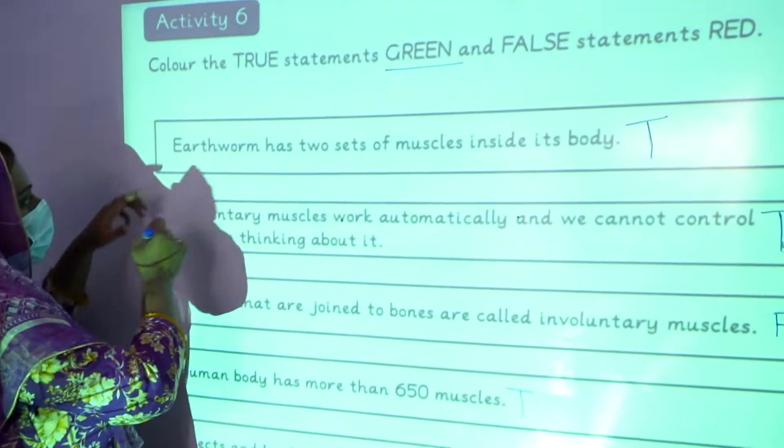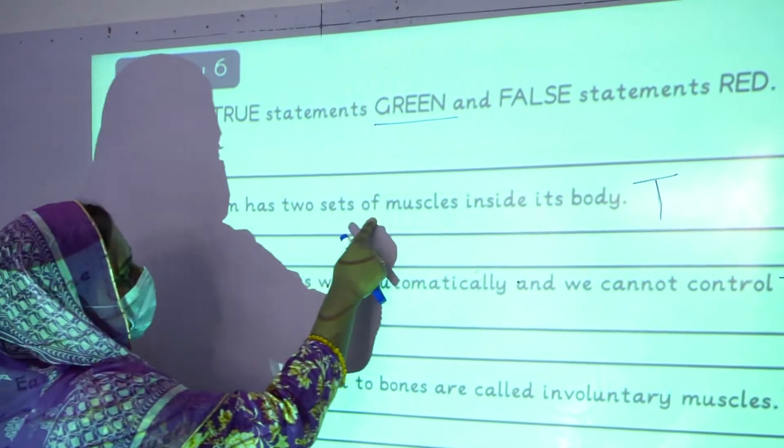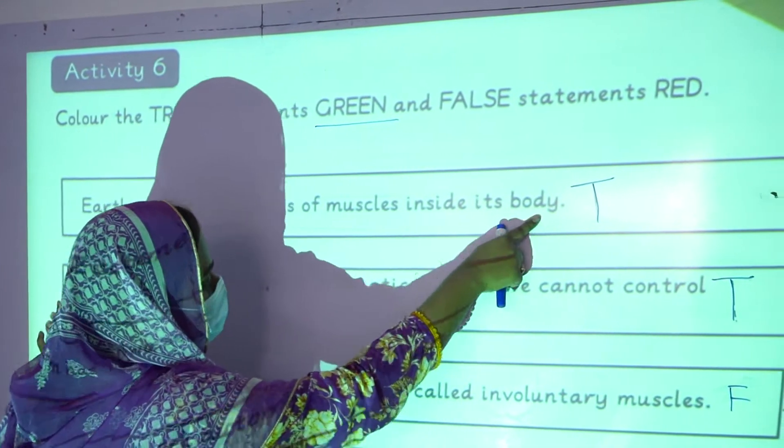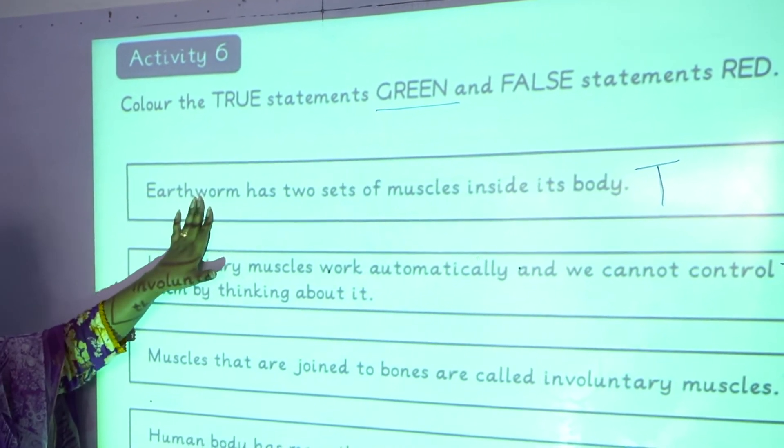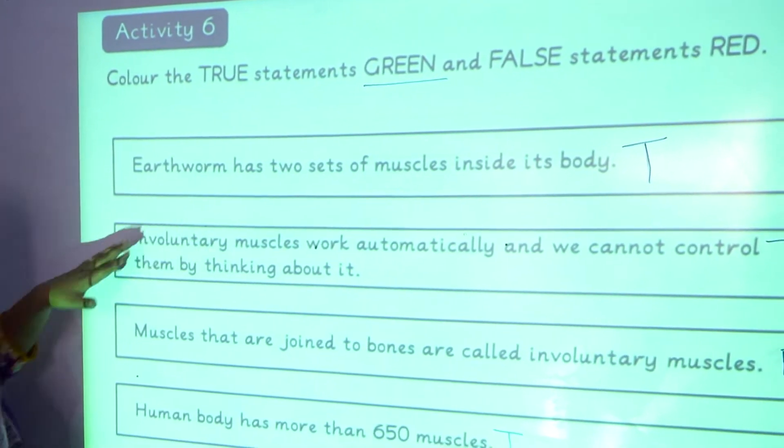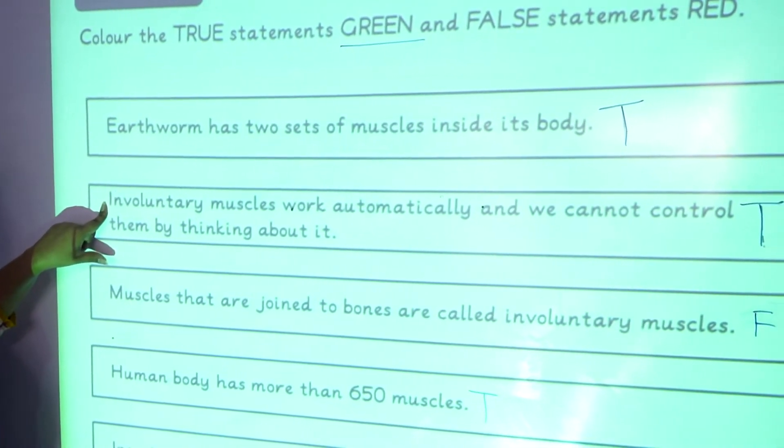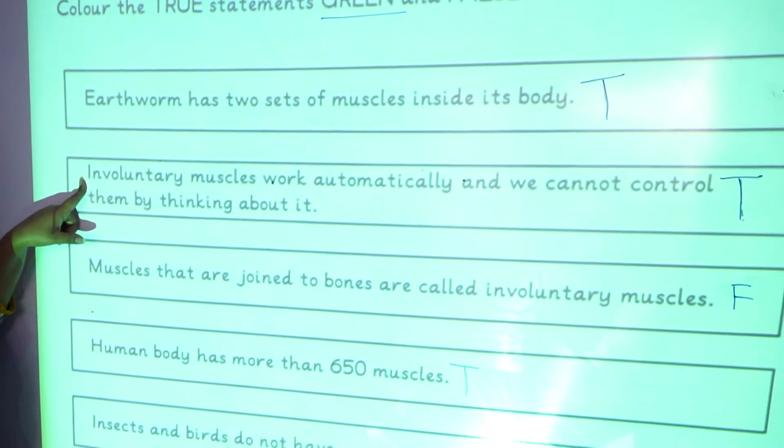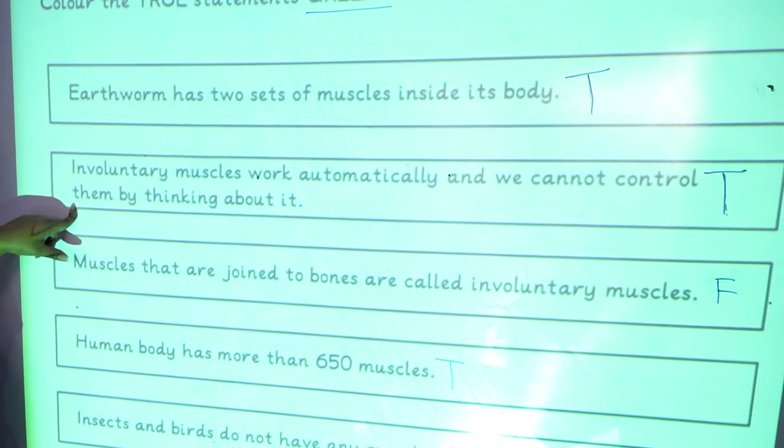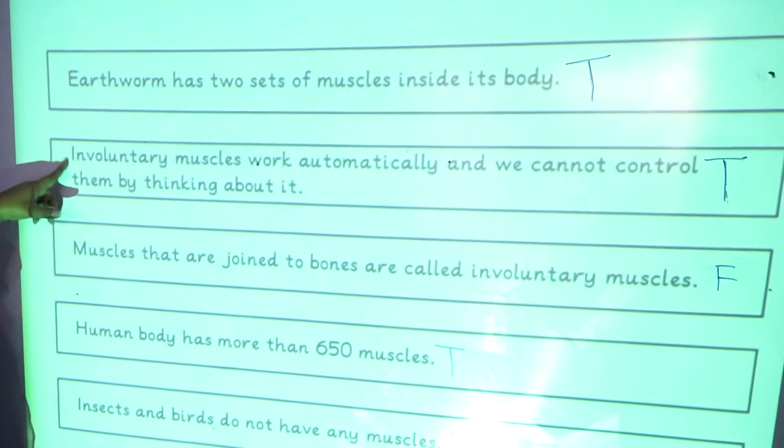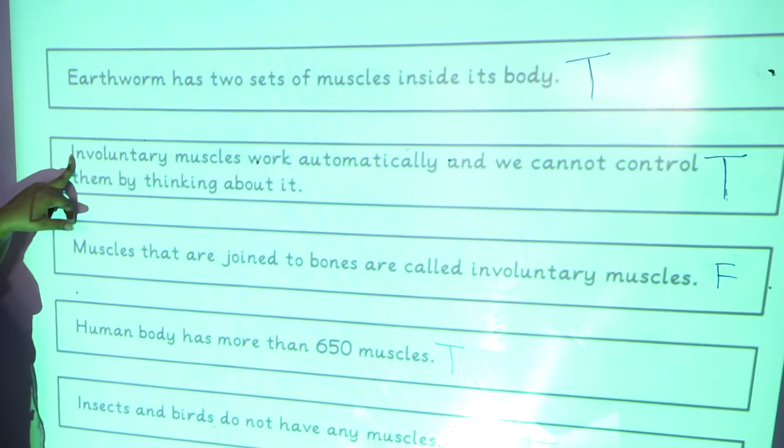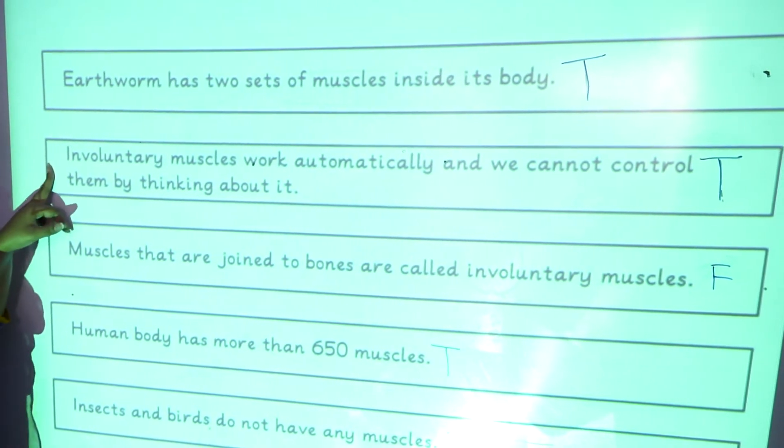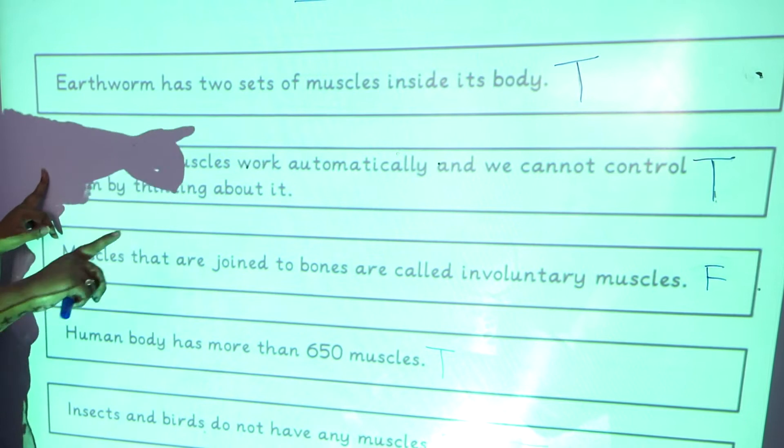The first statement is earthworm has two sets of muscles inside its body. The earthworm has two sets of muscles, that is true. Involuntary muscles work automatically and we cannot control them by thinking about it. That's true. I told you in my previous slide that involuntary muscles move automatically. They are not in our own control, so the statement is true.